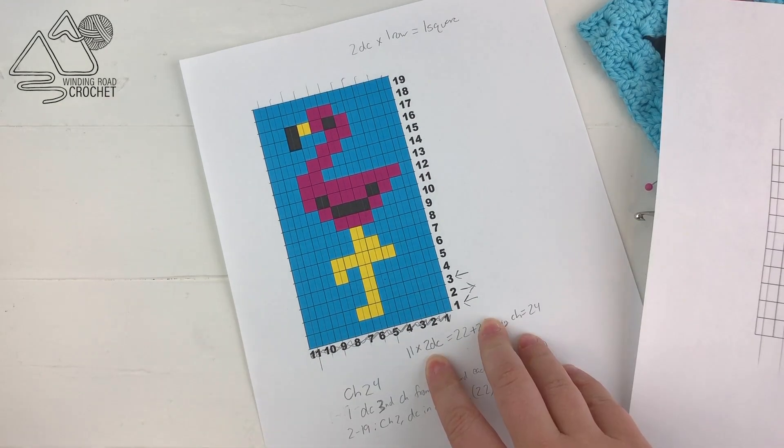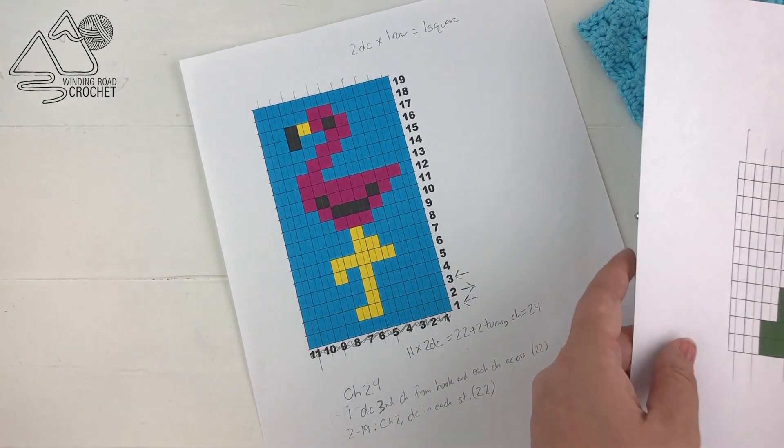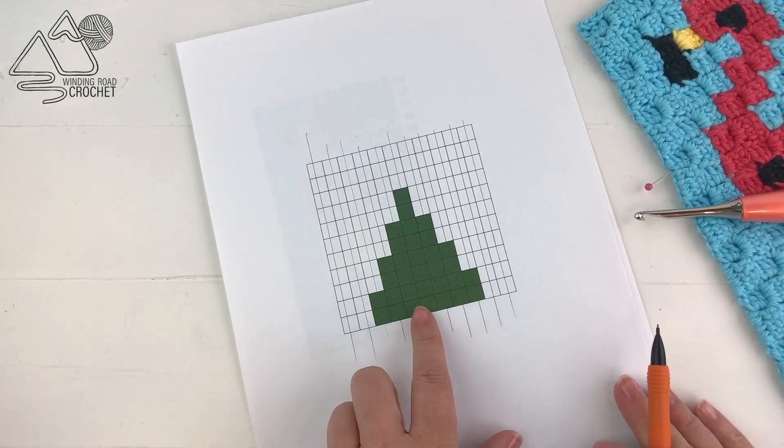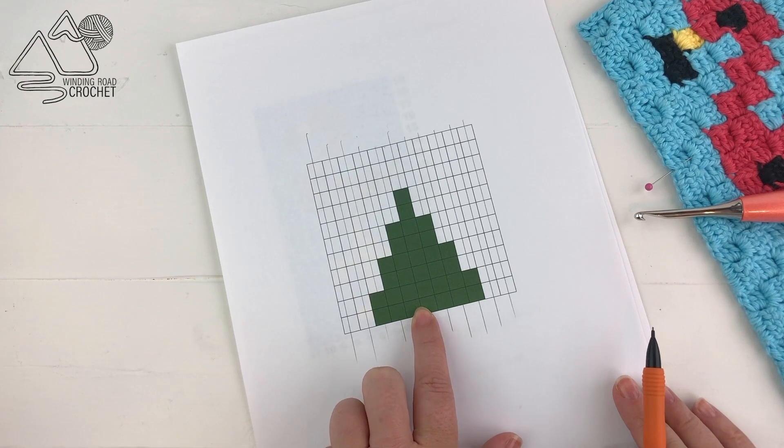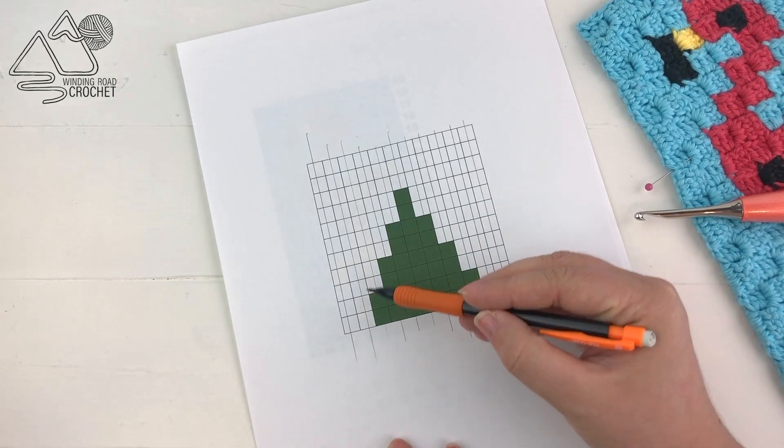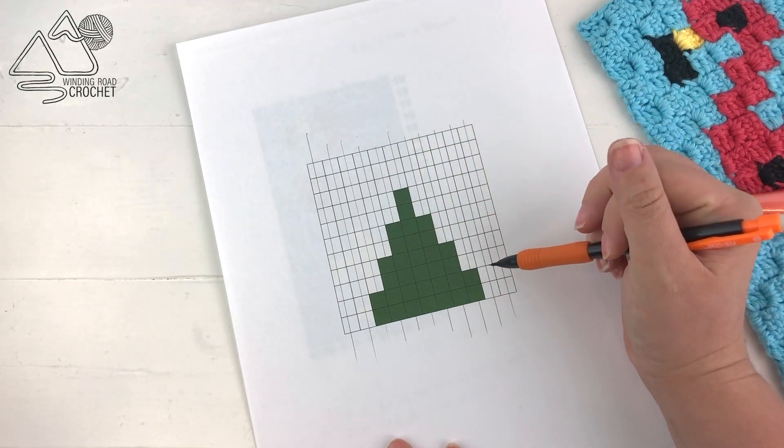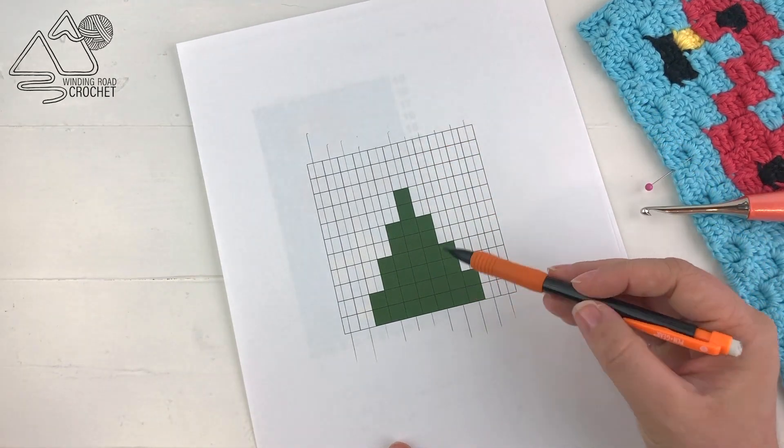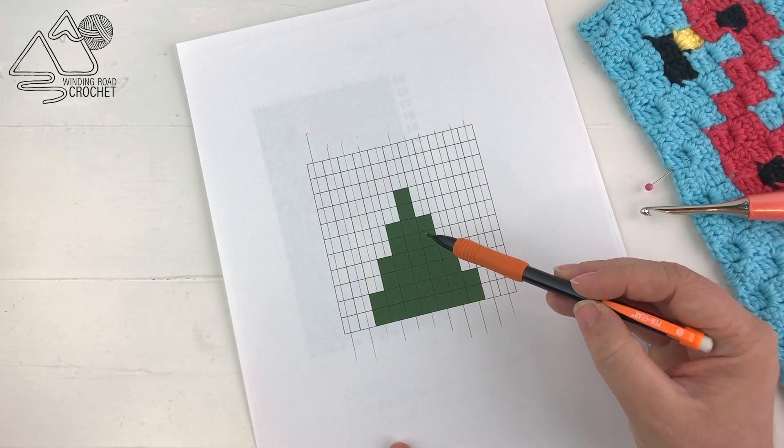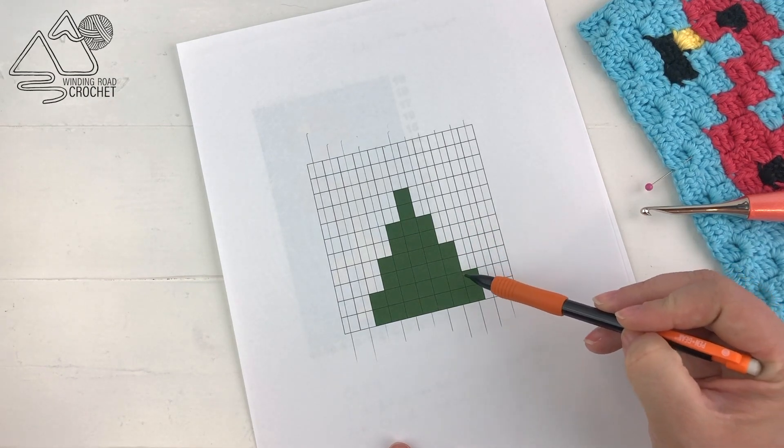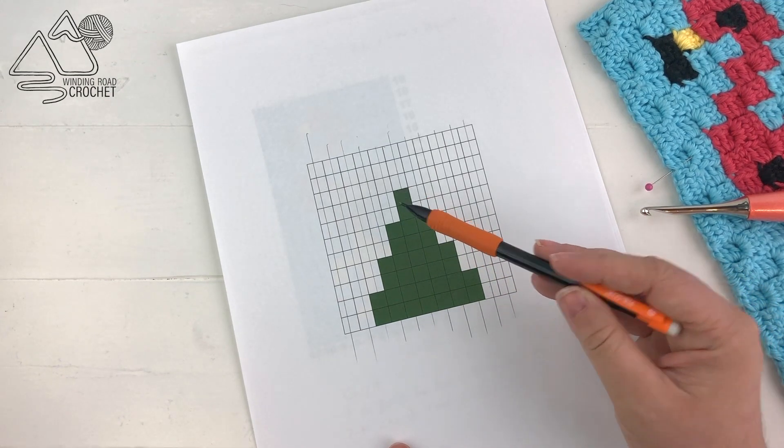Now before we go row by row and write out the color changes, let's take a quick look at some situations where we might actually change the colors of a certain stitch. So here I have a rather steep mountain, and working corner to corner crochet requires me to take these really big steps.